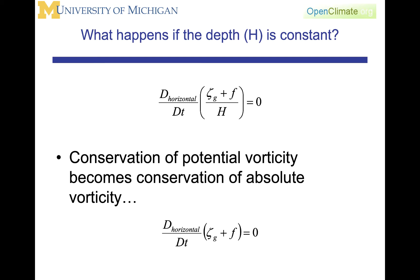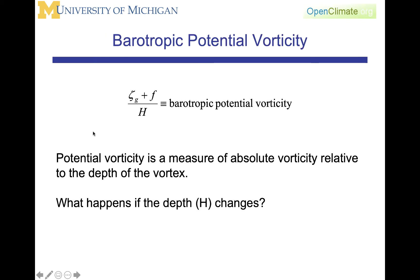However, we're more interested in the case where H does change. Potential vorticity then is a measure of absolute vorticity relative to the depth of the vortex. Hence if the depth of the vortex is changing, then the relative vorticity is going to have to change in order to maintain a balance with the planetary vorticity.